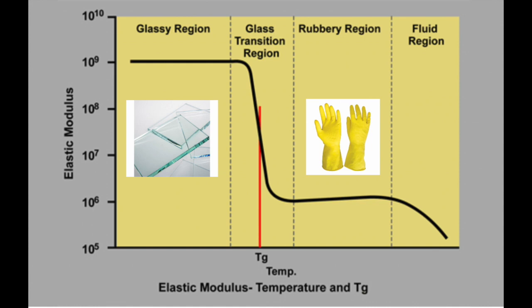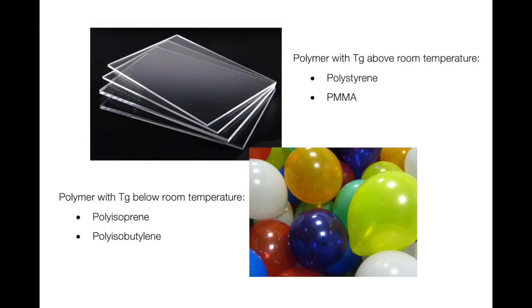For amorphous polymer, it behaves like hard glass below TG and behaves like soft rubber band above TG. Different materials will have different glass transition temperatures.